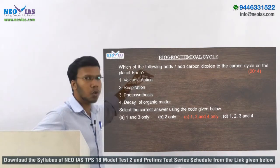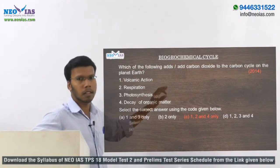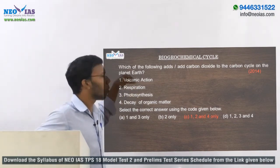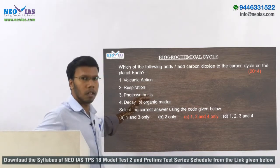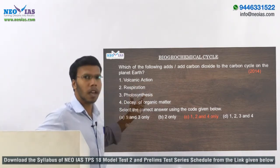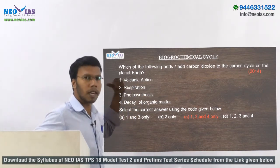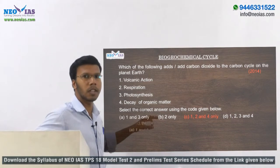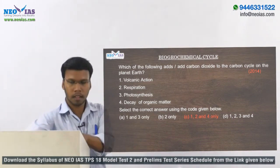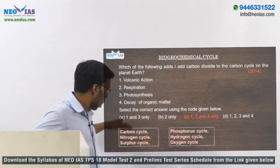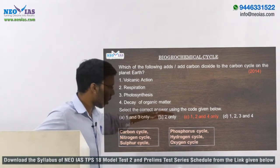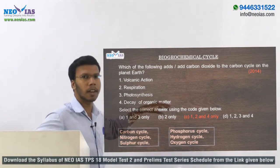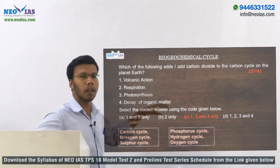The next topic is biogeochemical cycles, or simply nutrient cycles. Questions have been asked about the carbon cycle — for example, how a particular form of carbon is added to the carbon cycle. Similarly, they may ask how nitrogen is added to the nitrogen cycle, or how sulfur is added to the sulfur cycle. The main cycles to study are: carbon, nitrogen, sulfur, phosphorous, hydrogen, and oxygen cycles. Focus on how each nutrient is added to its cycle and how humans affect that particular cycle.